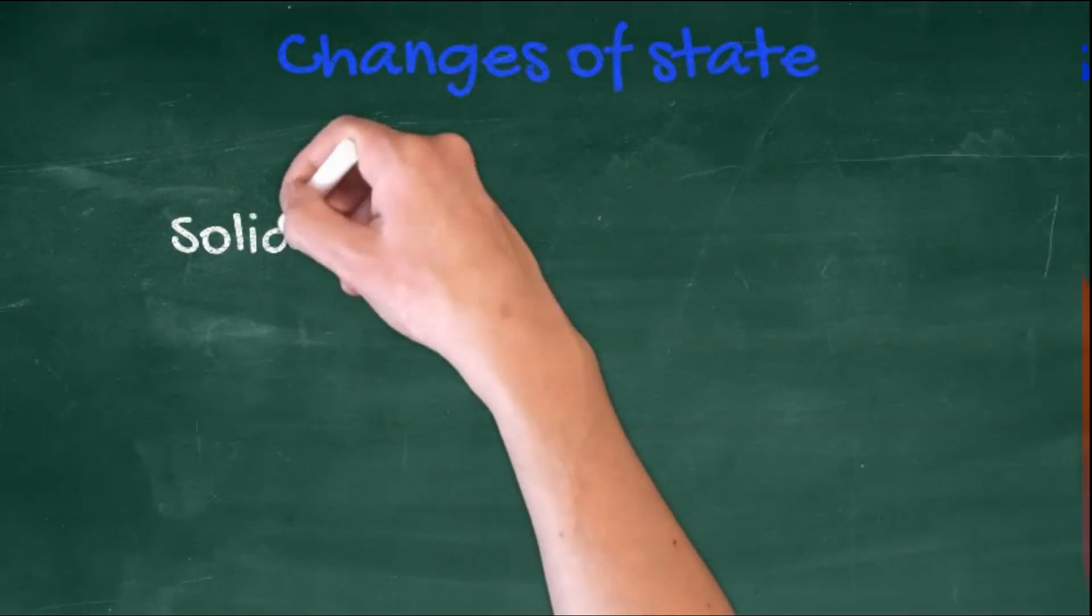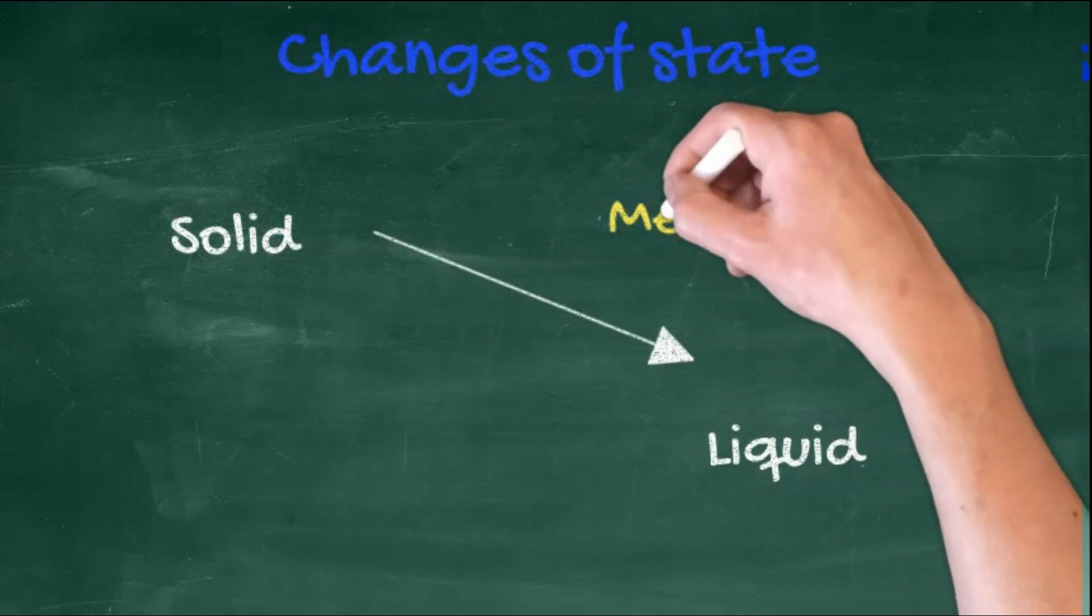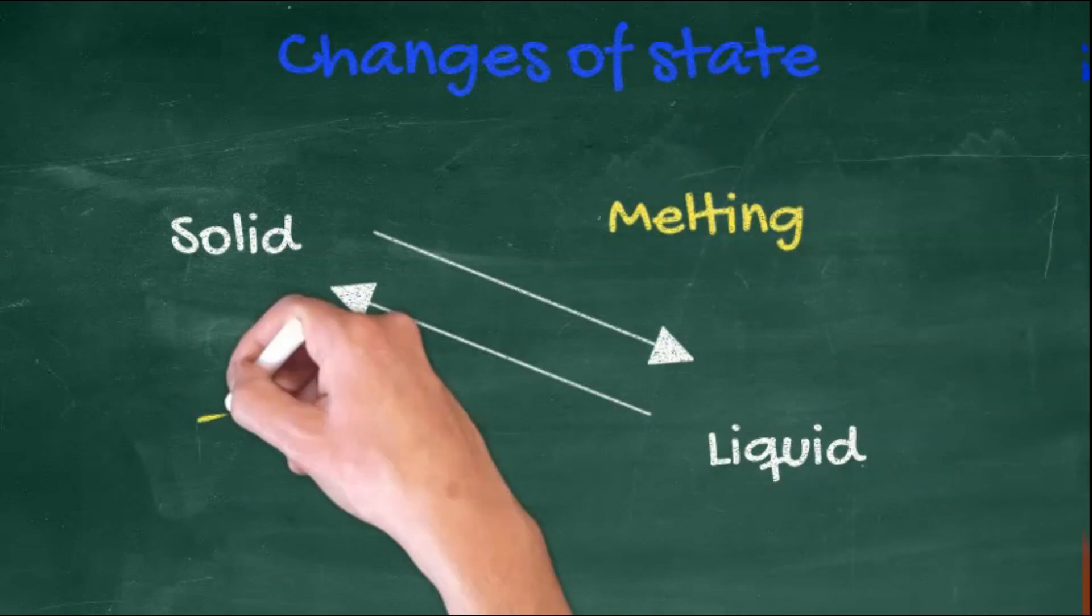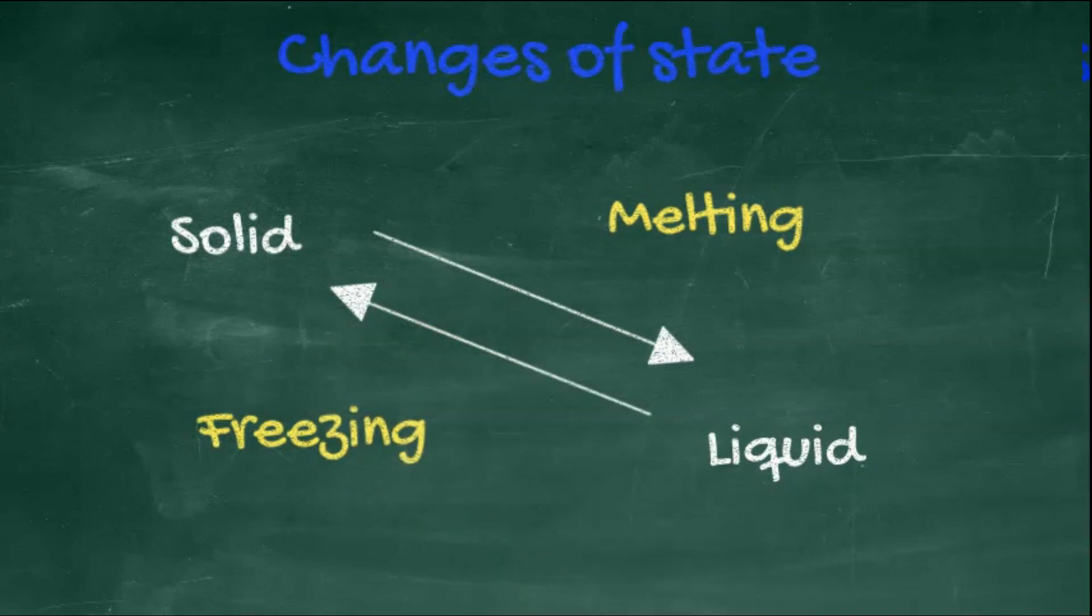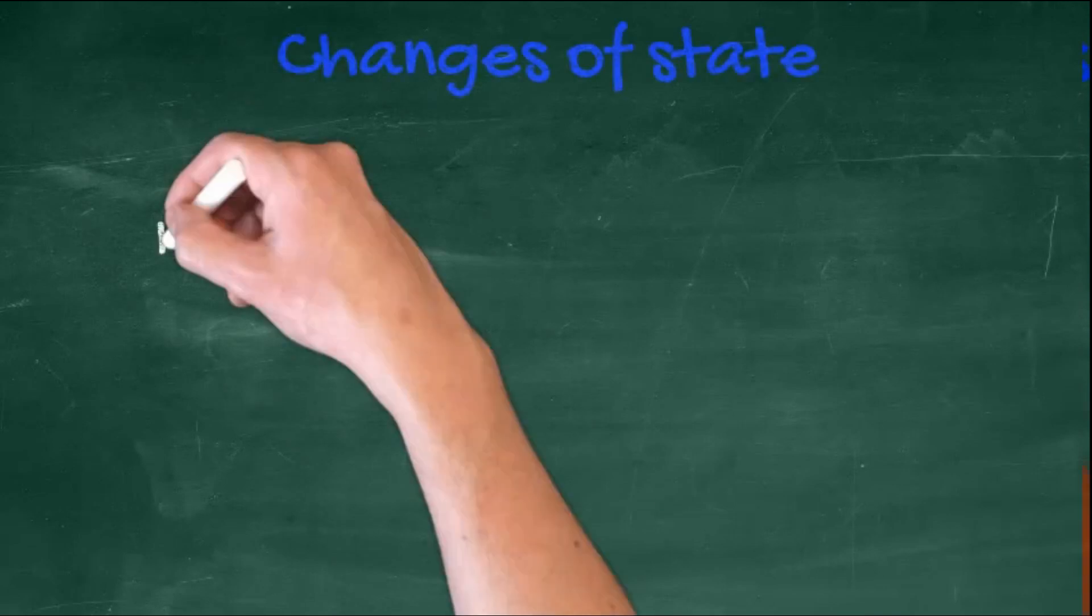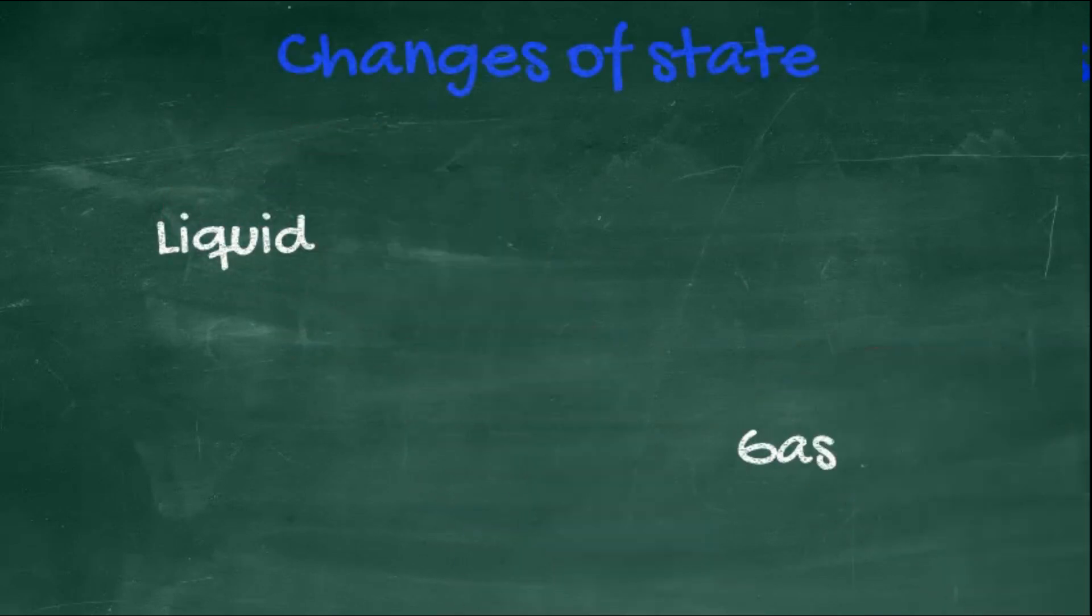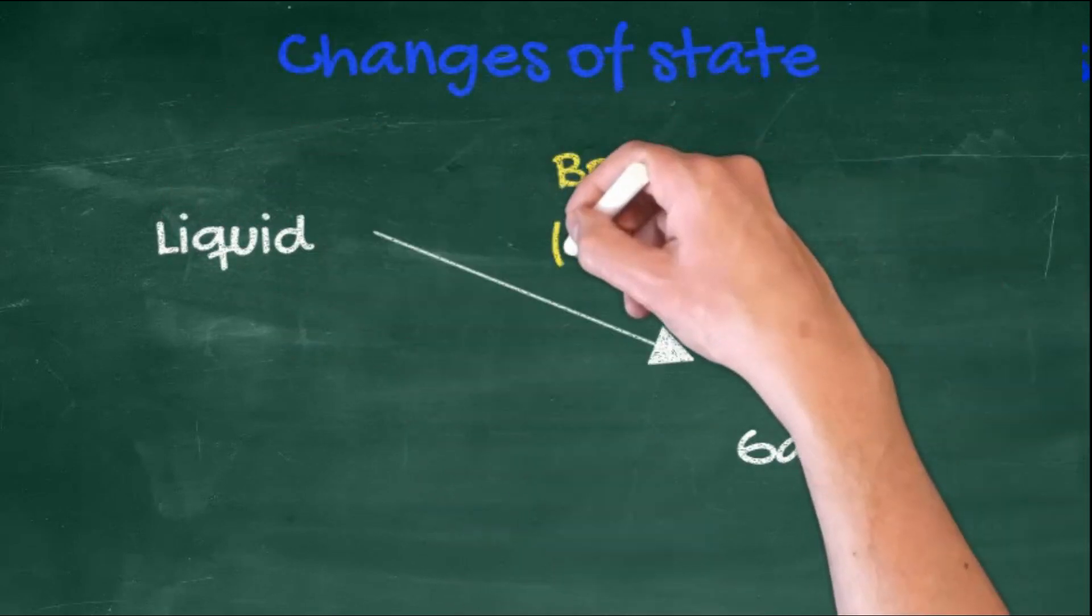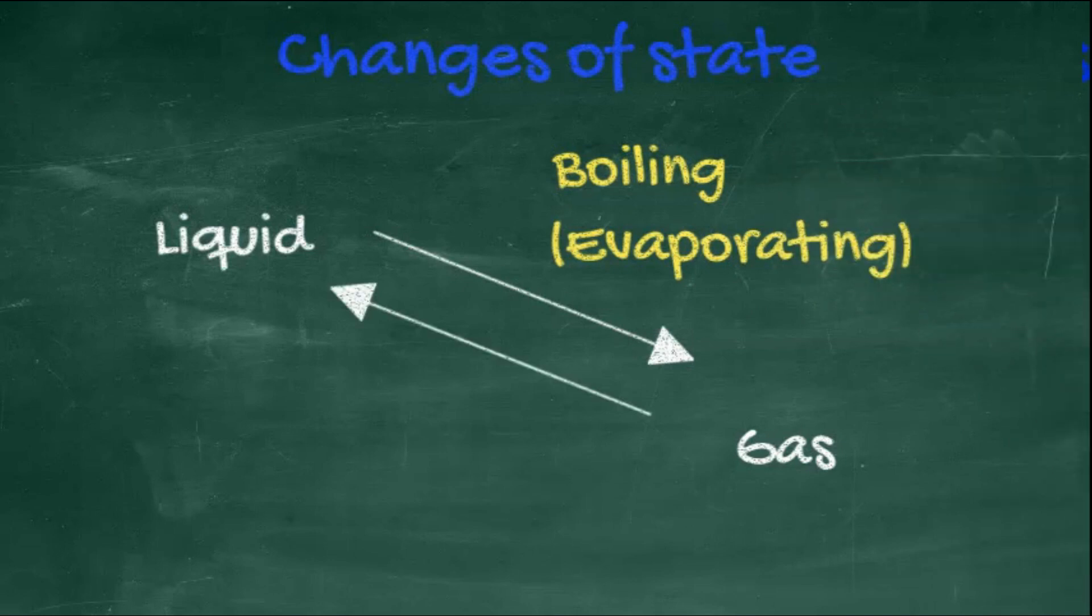We call the change from solid to liquid melting, and from liquid to solid, freezing or solidifying. Going from liquid to a gas, a higher energy state, we call boiling or evaporation. And from gas to liquid, condensing or condensation.